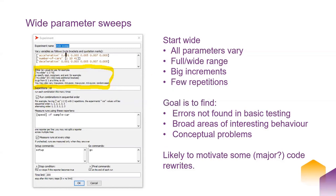So these are all the parameters — we have them all varying across all of their ranges. You can either set them to vary at a fixed list of points or within a range according to a certain increment. By adding the extra brackets, you can specify beginning of the range, increment, end of the range. You can do this as much as you want.